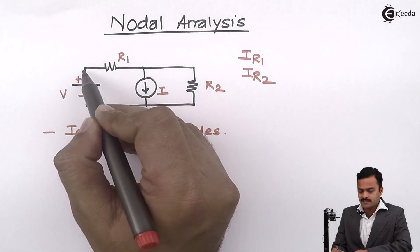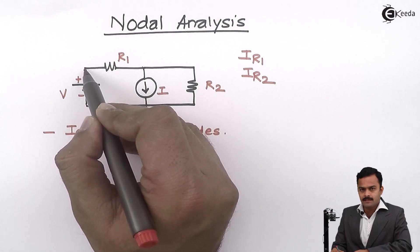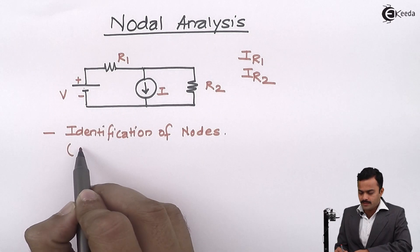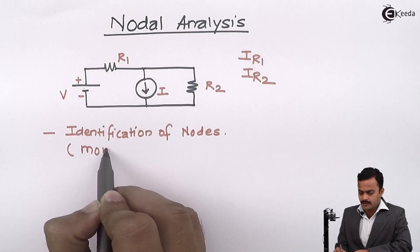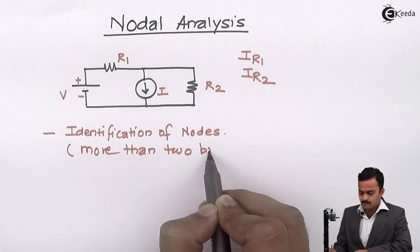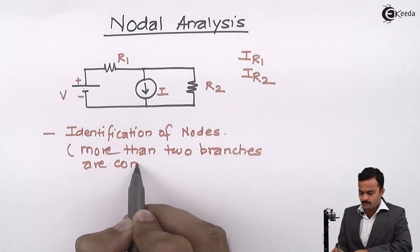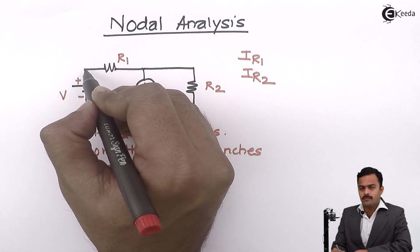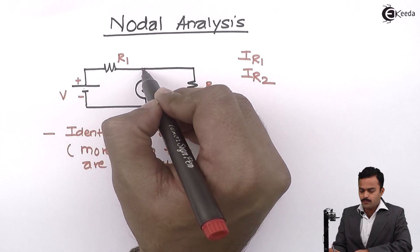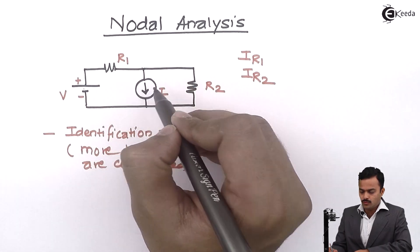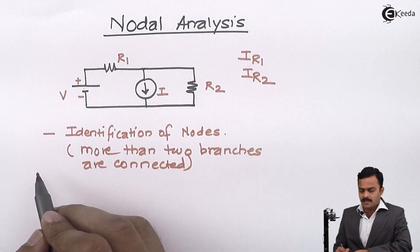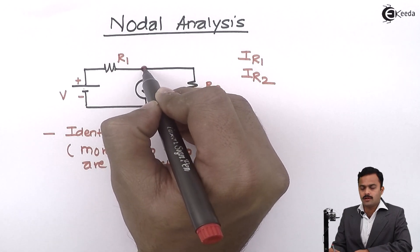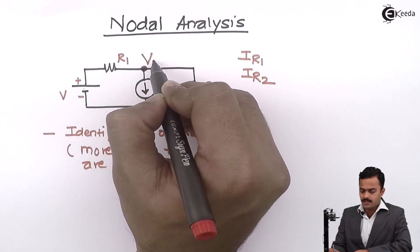Now here, two branches are connected — but a node requires more than two branches. At the next point, we count one, two, three — three branches are connected. Yes, so this will be a significant node.